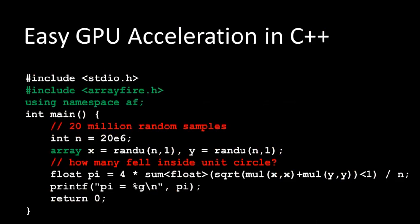What does ArrayFire look like? The main focus is on ease of use while maintaining top-notch performance. It's simply a single header file that you include in your program with one namespace — the AF or ArrayFire namespace. It offers a new data type called array. You can declare variables as an array data type, and any subsequent operations you perform on array variables will run on the GPU without worrying about GPU device code details.